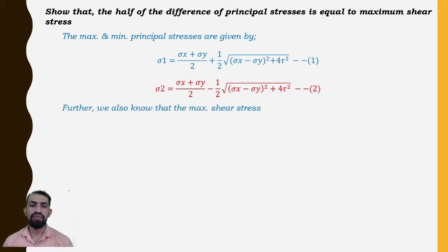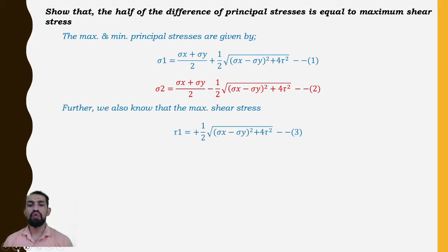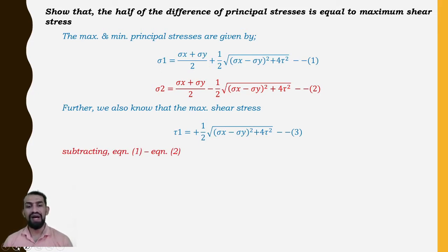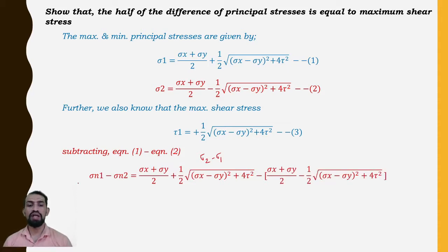We also know that the maximum shear stress τ_max = (1/2)√[(σx − σy)² + 4τ²] as the third equation. Now subtracting equation 2 from equation 1 — that is σ1 minus σ2 — and simplifying this format.